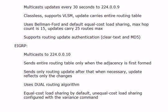EIGRP — much more to come about this, but just a couple of basics. EIGRP multicasts out to 224.0.0.10. We have adjacencies with EIGRP that we don't have with RIP. Neighboring routers need to become adjacent to each other through a process we'll talk about later, before they even exchange updates. EIGRP will send an entire routing table only when an adjacency is first formed — after that it sends only a routing update when there's an actual change in the network topology, and the update reflects only the changes.